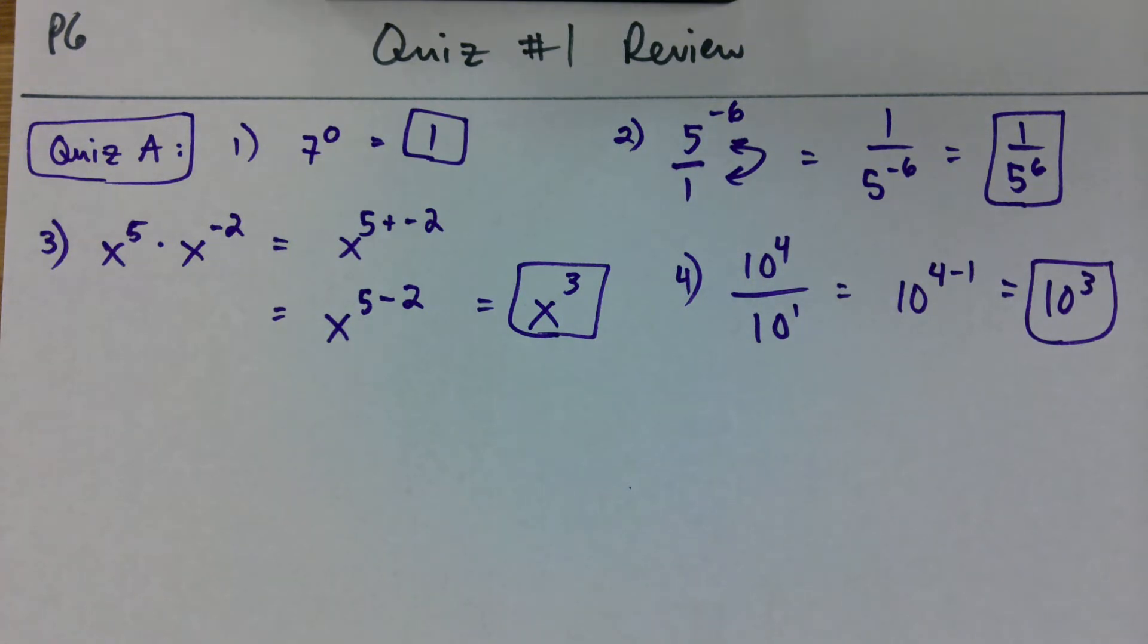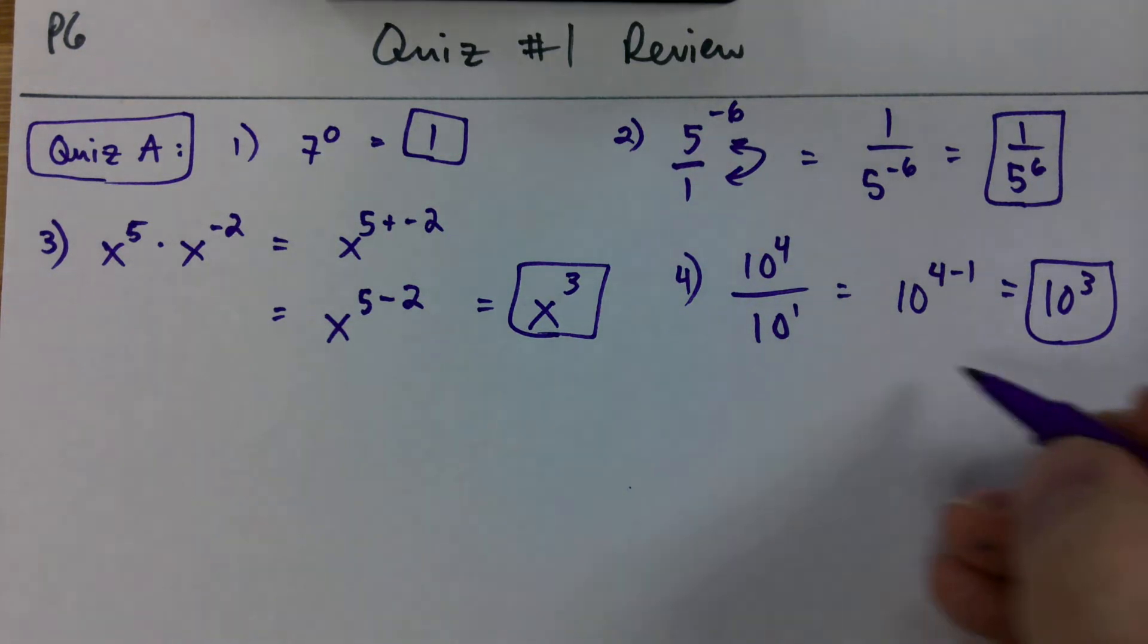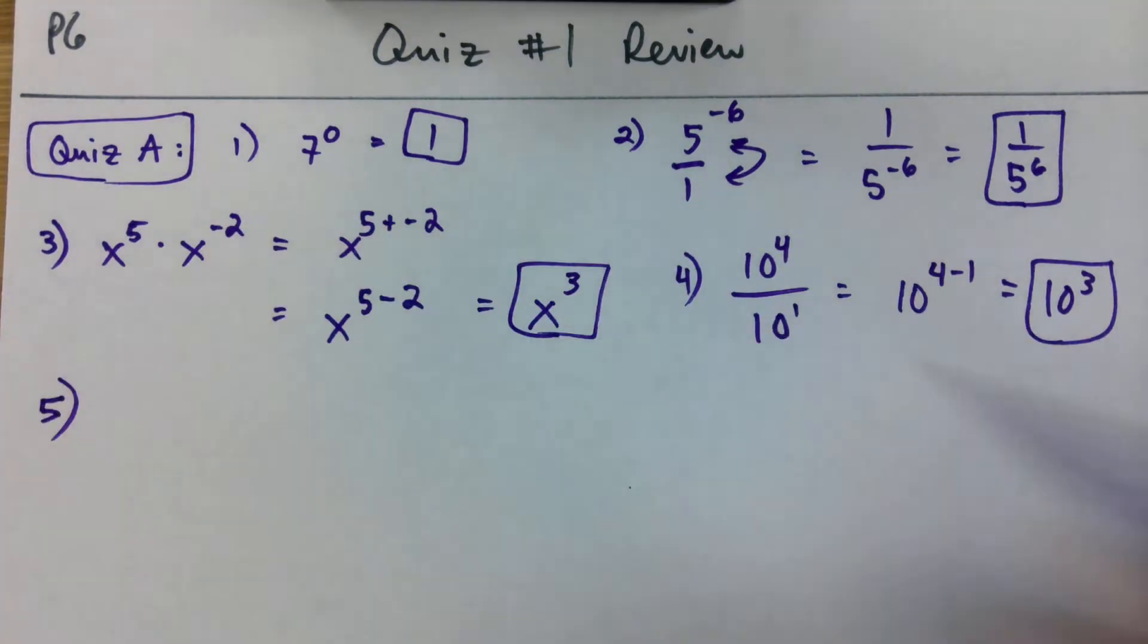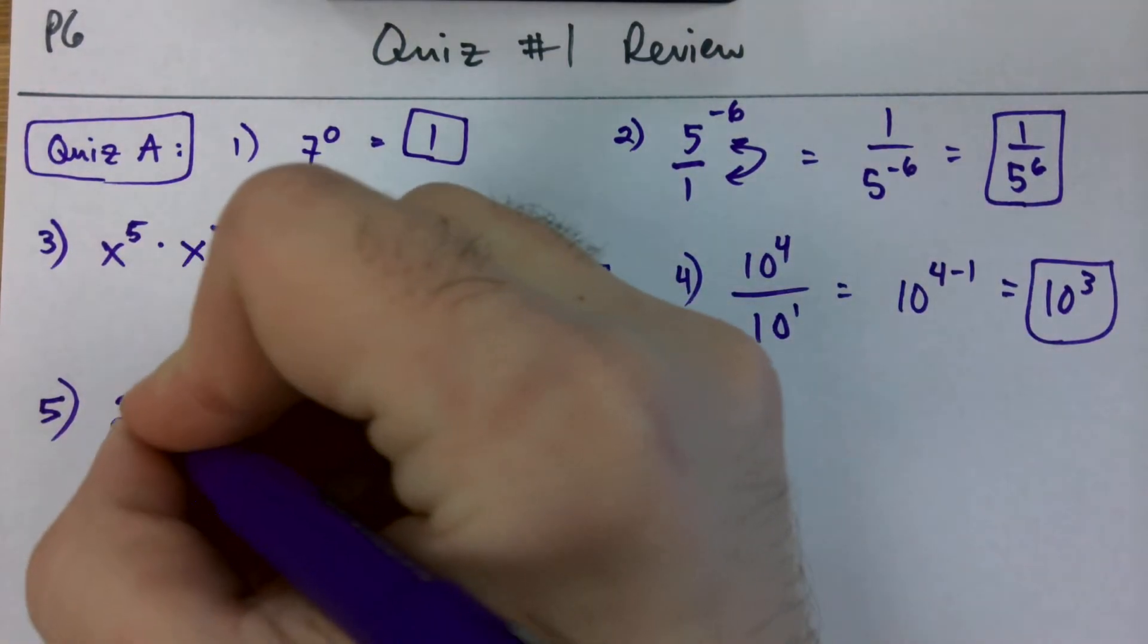If you added them downward, maybe you got B. I don't know how you would have got C, but that's all right. Again, all kinds of things can go into why you got the score you did. So, don't blame your math abilities. I have bad days, too. I totally get it.